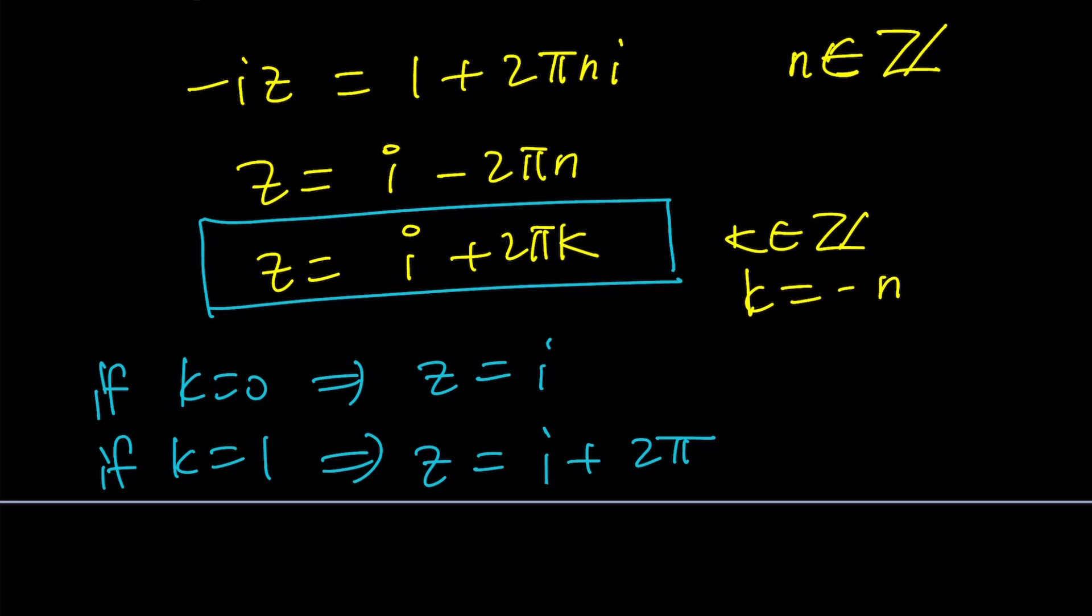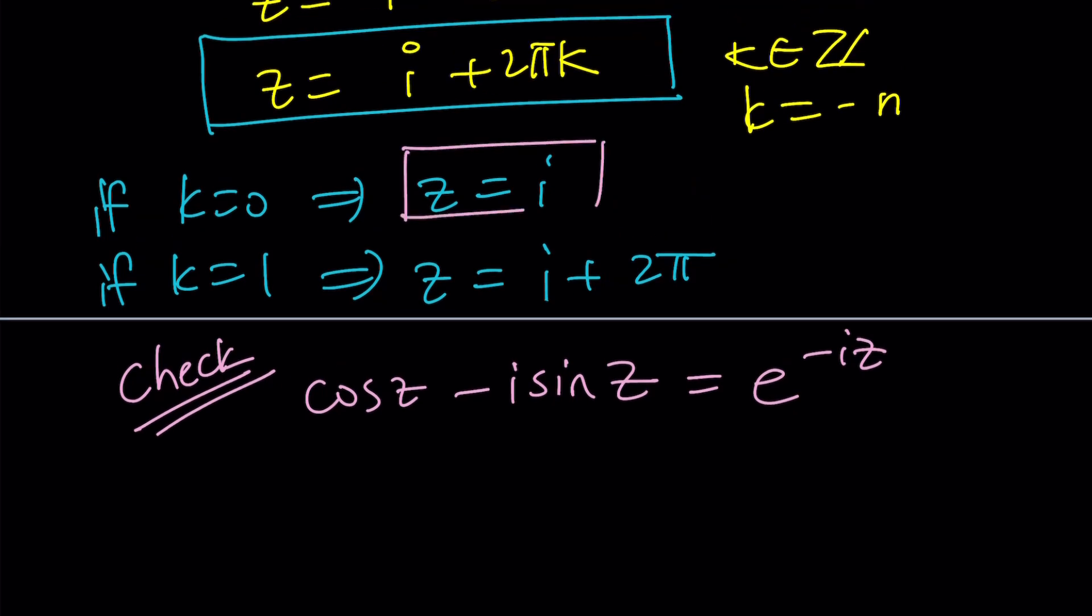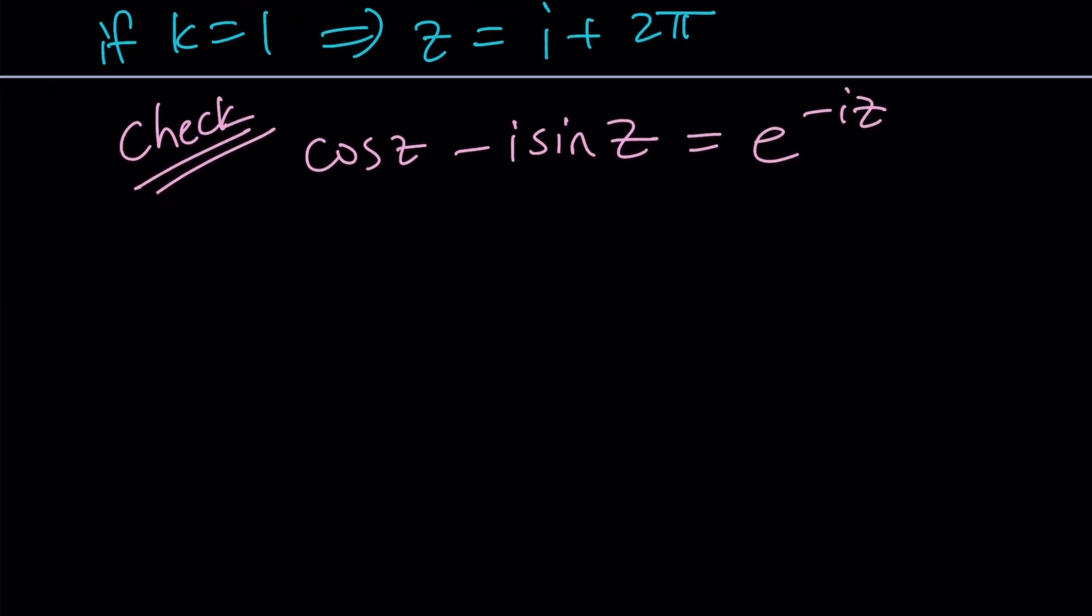Let's check our work. What if we made a mistake? Checking work is always a good idea, right? Cosine z minus i sine z is equal to e to the negative i z. I'm going to replace z with i because remember z equals i is a solution so it should satisfy the original problem. If you replace z with i you get cosine of i minus i times sine of i which is e to the power negative i times i.